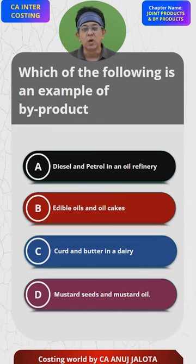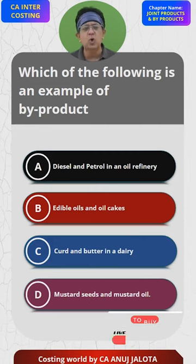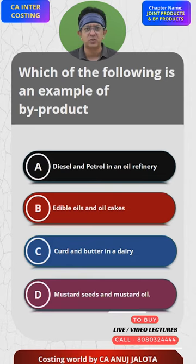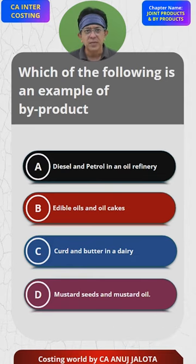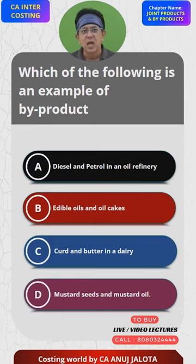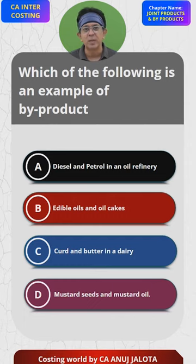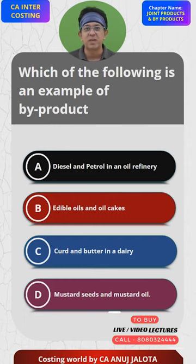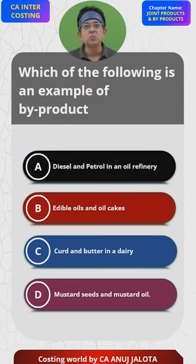What do you mean by by-product? A by-product is a product which is not your main product — it got produced as a result of the manufacturing process, not intentionally. Diesel and petrol are joint products. Curd and butter are joint products. Mustard oil is produced from mustard seeds, so one is raw material and the other is finished goods. Therefore, the answer is B: edible oil and oil cakes.